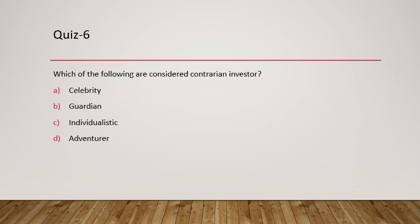Question number six asks: which of the following are considered contrarian investors — meaning they go against the tide? As discussed in a previous question when we covered their characteristics, this happens to be individualistic investors, who are contrarian in their approach.